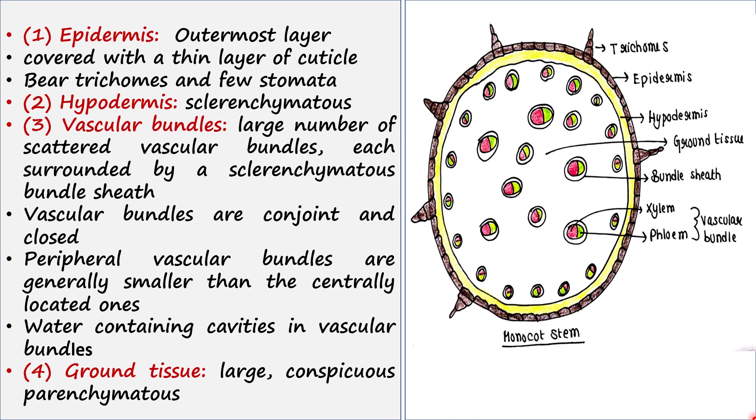When we talk about monocot stem anatomy, we should see some layers. First is the outermost layer, that is epidermis. This brown color layer is the epidermis, the outermost layer.